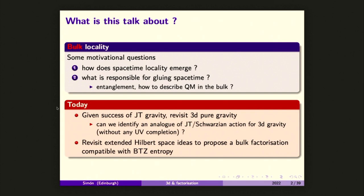Since in general I don't know how to do it, we were inspired by the progress in JT gravity — not viewing it as a fully microscopic theory, but trying to define JT quantum gravity independently of any UV complete theory or the full string theory. I want to ask whether by revisiting our understanding of 3D gravity along the lines of JT we can achieve a similar kind of proposal. That will be the first part of this talk.